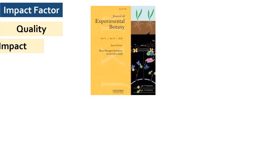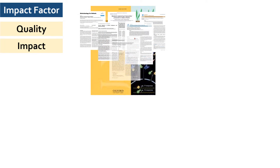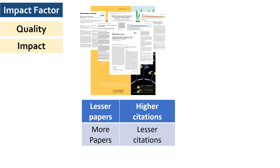Impact factor is one of the most important measures to determine the importance of a journal, or how impactful a journal is in the scientific community. It is based on the number of total citations received by all the papers published in that journal during a particular period of time. Journals which publish fewer papers but receive higher citations will have a higher impact factor, while journals that accept too many articles but are cited less will have a low impact factor.